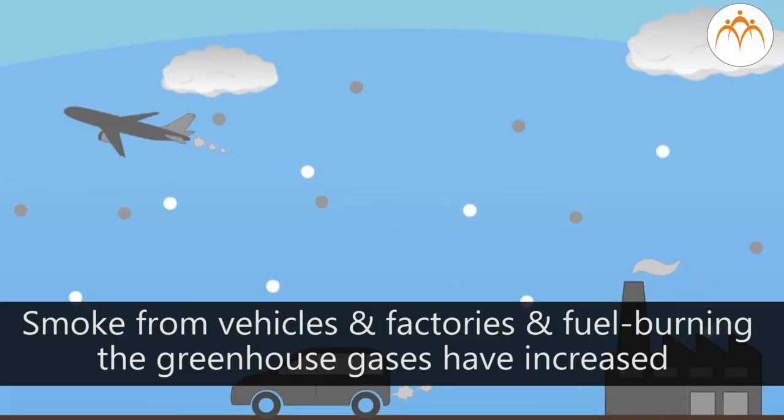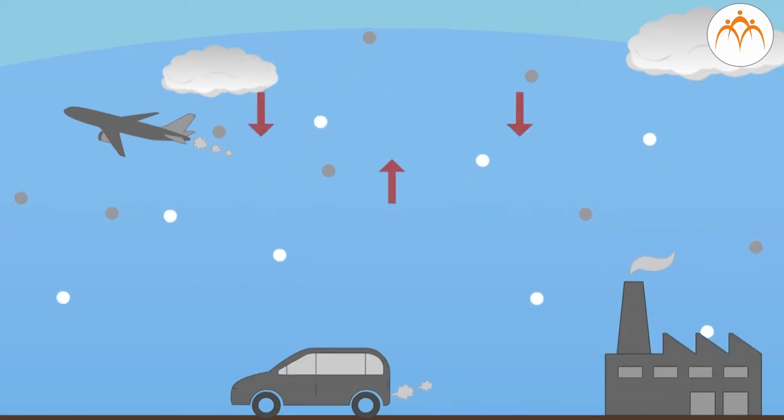Due to the smoke from vehicles and factories and fuel burning, the greenhouse gases have increased. Due to this, the absorption of heat has increased and so the greenhouse effect takes place.